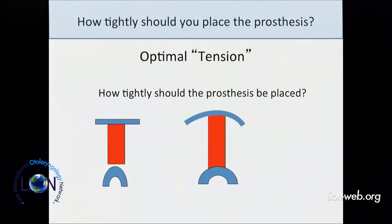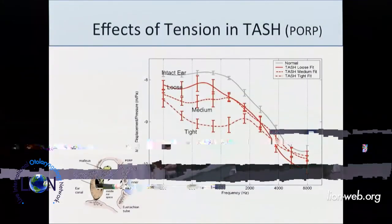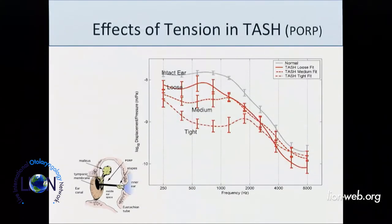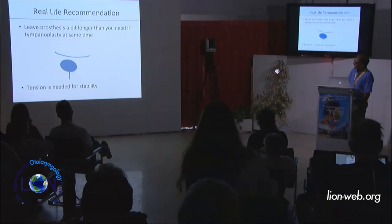Optimal tension: how tightly should you place the prosthesis? If you put it in tight, you lose low frequencies because you stiffen the eardrum and footplate — we lose about 10 dB going from a loose to a tight prosthesis. We know stiffness dominates low frequencies. However, tension might be needed for stability — a fascia graft tends to heal in a straight line and might lift off. So you might want to place it tight to prevent a 60 dB loss from displacement.